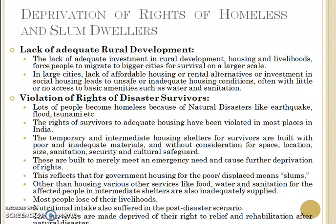This reflects that government housing for the poor and displaced essentially means slums — the government itself creates another slum for them. Other than housing, various services like food, water, sanitation, and other needs of affected people in intermediate shelters are also inadequately supplied, violating further rights. Most people lose their livelihood because in new areas they do not get any jobs, and nutritional intake also suffers. Finally, survivors are deprived of their right to relief and rehabilitation after natural disasters, as the government fails in this duty. That is all about the deprivation of rights of homeless and slum dwellers. In the next class we will discuss another disadvantaged group — take care and have a good day.